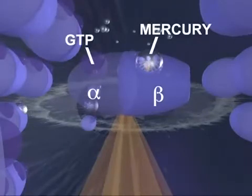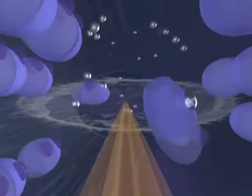Since bound GTP normally provides the energy which allows tubulin molecules to attach to one another, mercury ions bound to these sites prevent tubulin proteins from linking together.